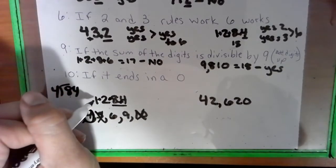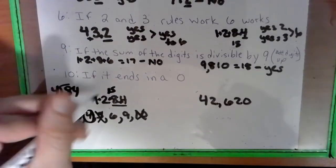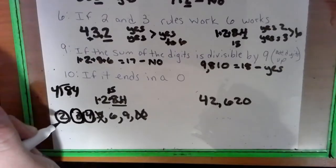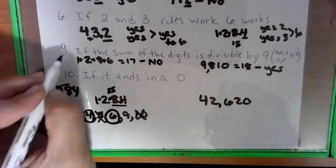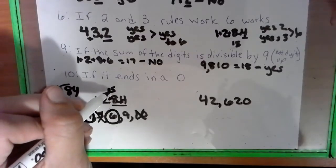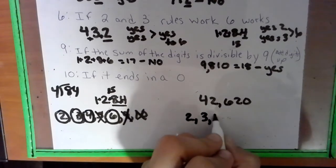We've got to check the 3s rule. Let's add these digits up: eight, nine, 10, 11, 11 and 4 is 15. I'm going to write that above it. Can 3 go into 15? Yes. I said yes to 2 and 3, I said yes to 6. The adding rule also is the 9s rule. Can 9 go into 15, that sum above? No. Cross that out.